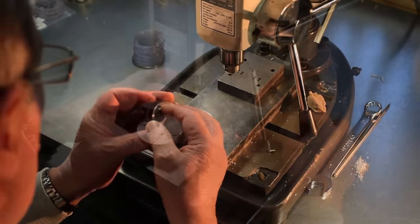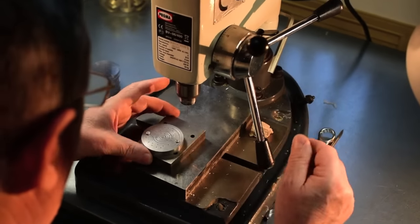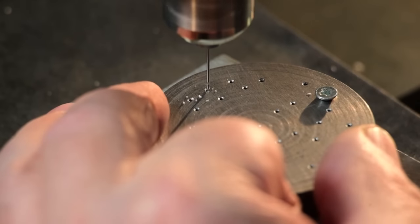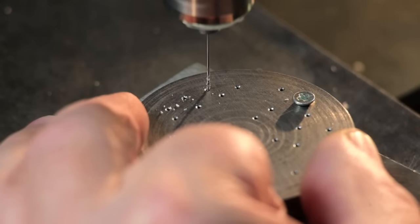Once the polycarbonate discs have been machined, they are sent to our drilling station where a series of holes are drilled through them using a special template.